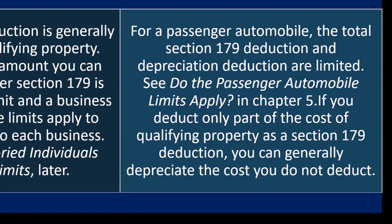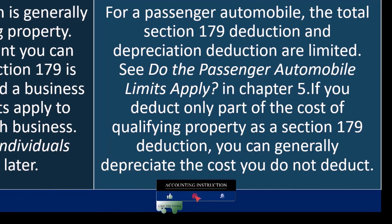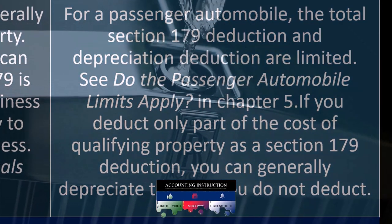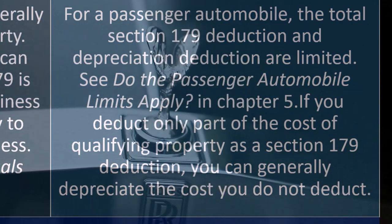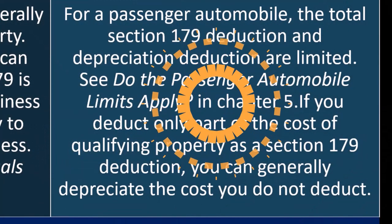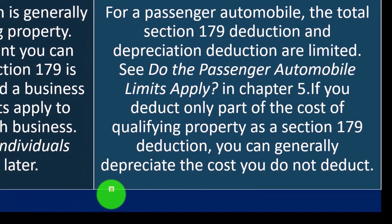For a passenger automobile, the total Section 179 deduction and depreciation deduction are limited. The IRS is concerned that people might buy expensive automobiles that aren't genuinely needed for business purposes — if you're just driving to a client's house, do you need a $150,000 car? They may be skeptical you're overdoing it on the personal luxury side rather than business use, so see the passenger automobile limit in chapter five.